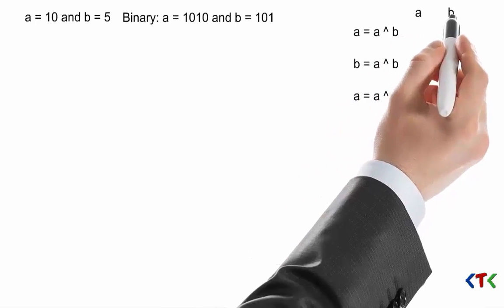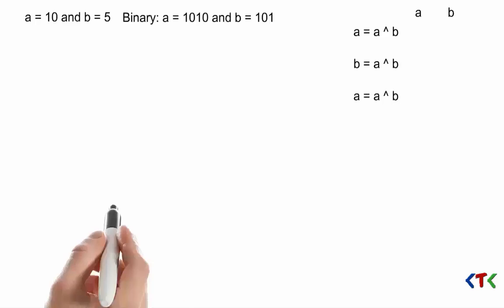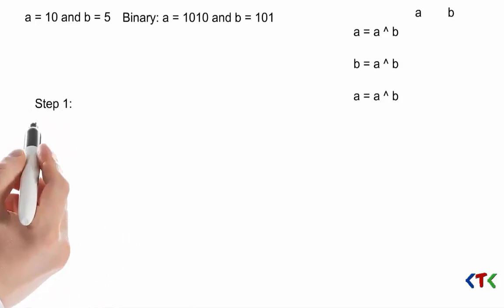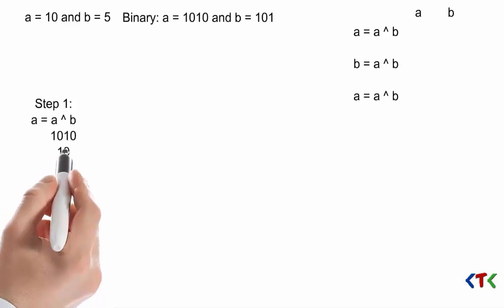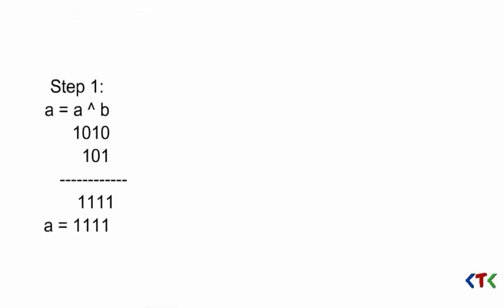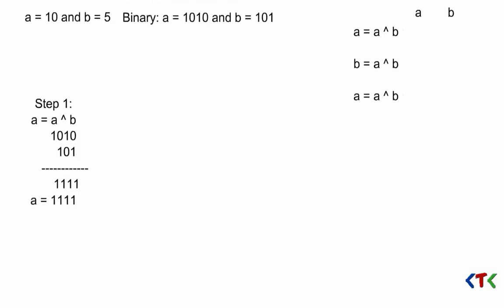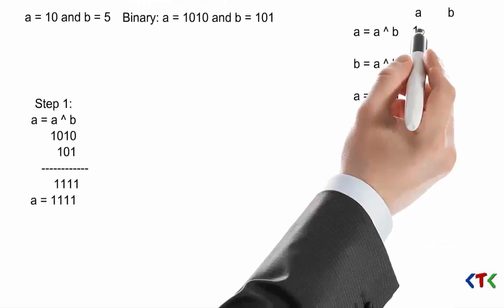We will write the value of a and b which we get after execution of each step. Step 1: a equals a XOR b, so 1010 XOR 0101. Where bits are different we get 1, according to the XOR rule. The result is 1111, which is 15 in decimal. So now a equals 15 and b remains 5.